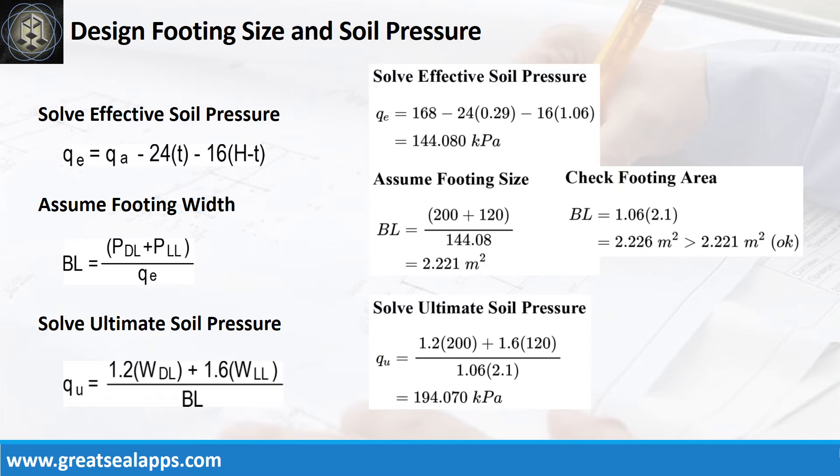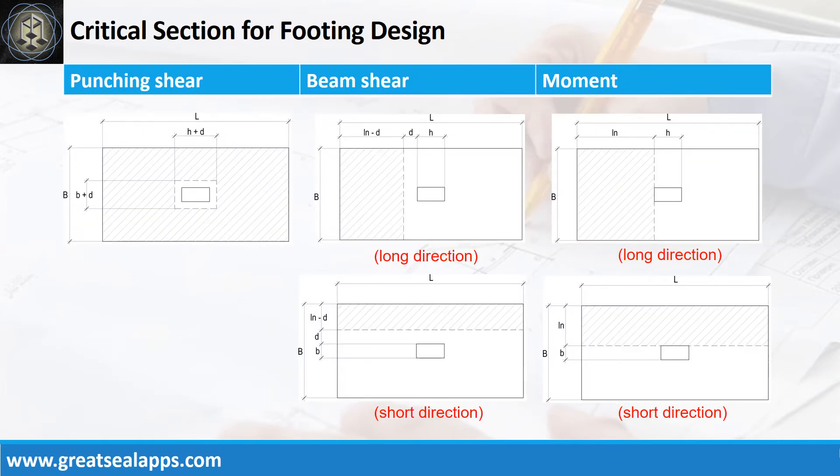The ultimate soil pressure is 194.07kPa. Critical section diagrams for punching shear, beam shears, and moment evaluations.